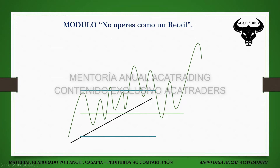Recuerden que un swing high o swing low es básicamente un patrón de tres velas. En el caso de un swing high, siempre hay un máximo más alto y dos máximos por debajo. En el caso de un swing low, hay dos mínimos más alto que el mínimo de la vela del medio. Nosotros podemos utilizar ese order block. Si en ese swing low tenemos una vela con cuerpo muy pequeño, fusionamos esa última vela con la penúltima vela bajista del swing y consideramos el mean threshold o punto de apertura como zonas referenciales. Si en la formación hay fair value gaps también los tenemos en consideración, porque un fair value gap en confluencia con el cuerpo de un bullish order block convierte la zona en high resistance liquidity run de alta probabilidad.